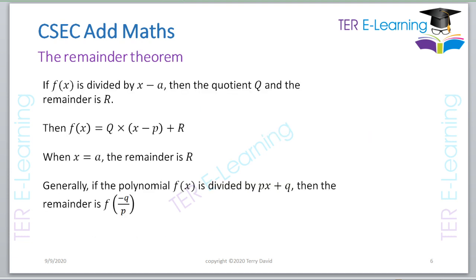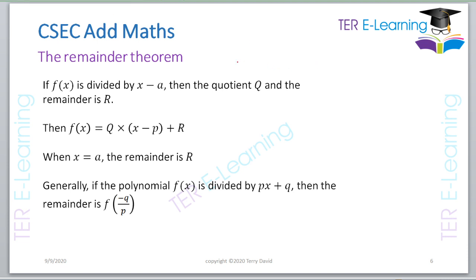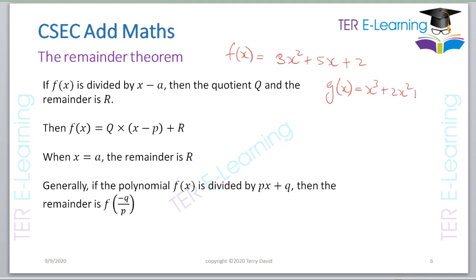A polynomial is simply an expression that looks like this. So let's say we had a polynomial f(x) equal to, for example, 3x² + 5x + 2 — in this case that's a quadratic. We can also have higher-order polynomials, for example x³ + 2x² + x + 1.